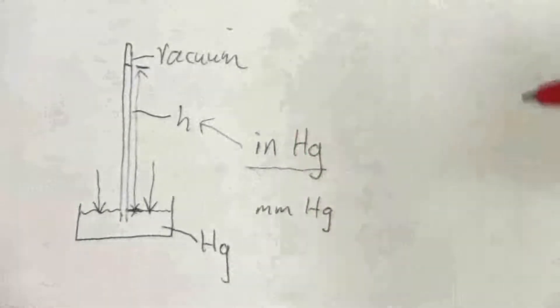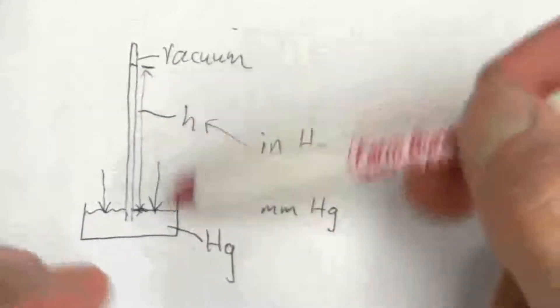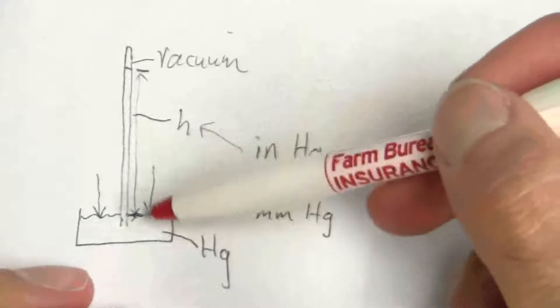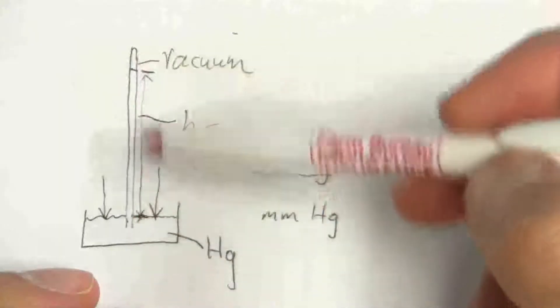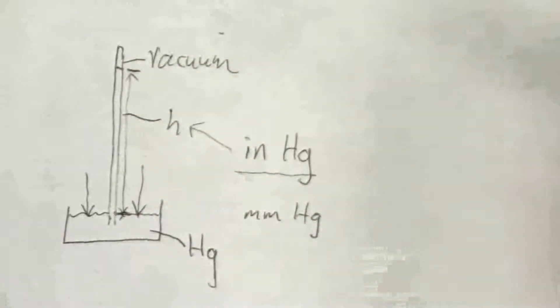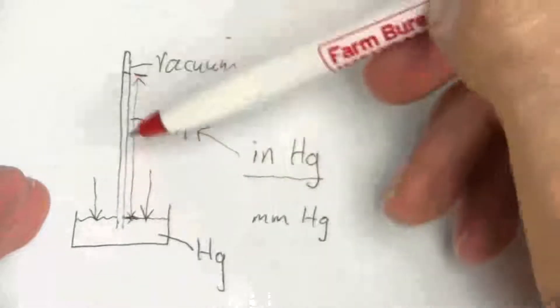And for very low pressures, it's not common, you wouldn't have atmospheric pressure, but if you had a very low pressure pushing down, it's not uncommon to have a column of water. Water doesn't weigh nearly as much as mercury, has a much lower density,